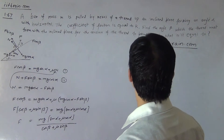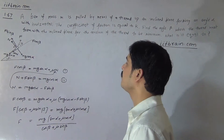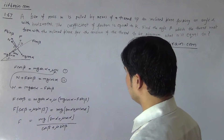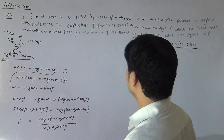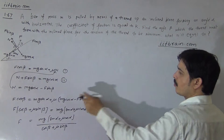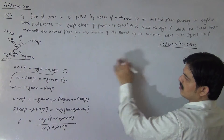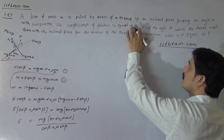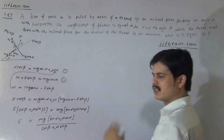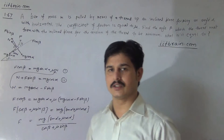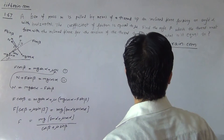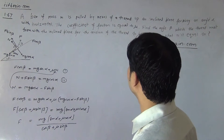Note: in the problem the coefficient of friction is given as k, but I am using mu out of habit — so treat mu as k throughout. The coefficient of friction is mu, and we need to find the angle beta at which the thread must form with the inclined plane for the tension to be minimum.